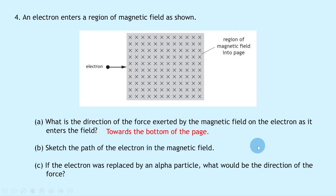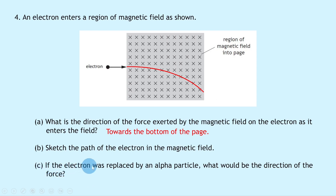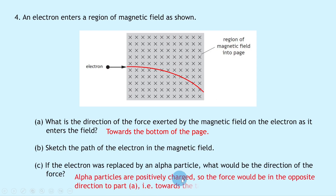In part b, since the force is towards the bottom of the page, the electron will curve downwards as it travels through the field. In part c, if the electron is replaced by an alpha particle — which is positively charged — the force would be in the opposite direction to part a, i.e., towards the top of the page, because the thumb direction must be reversed for a positively charged particle.